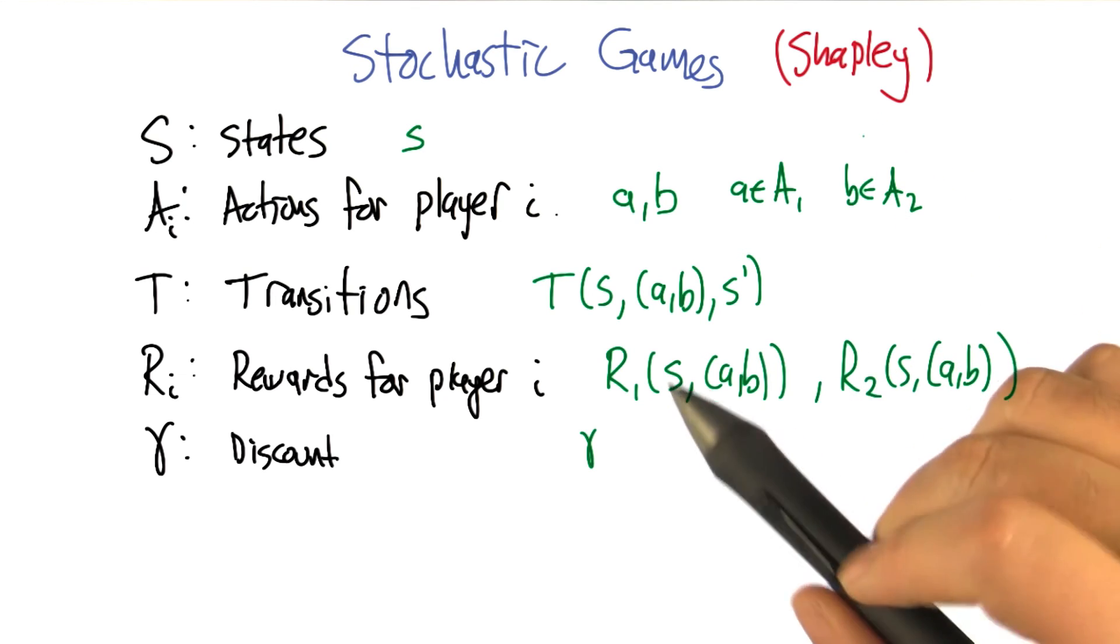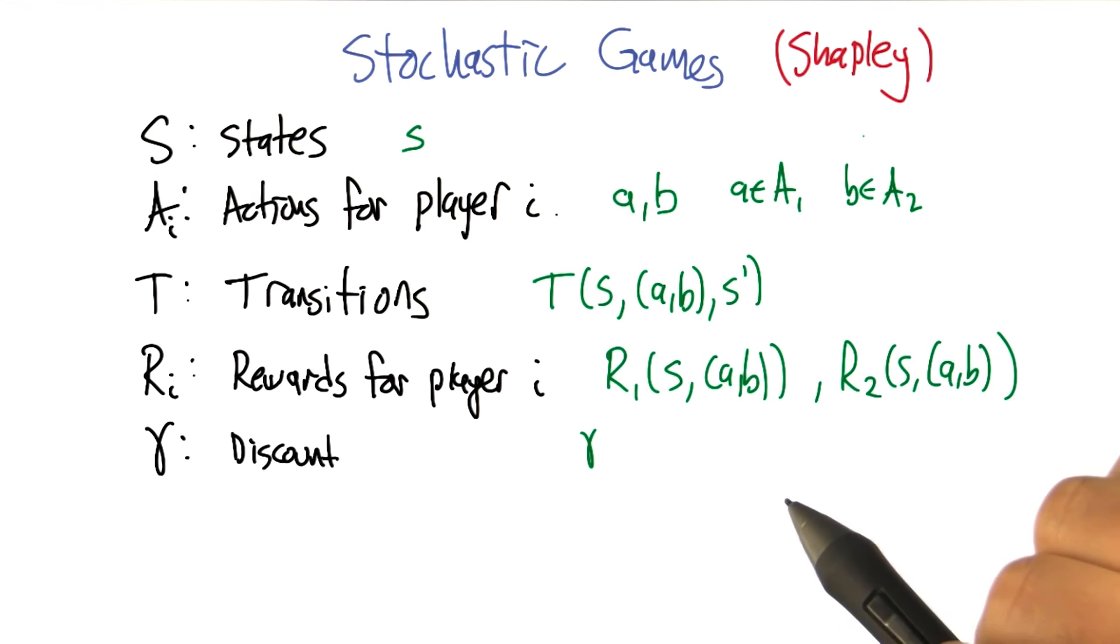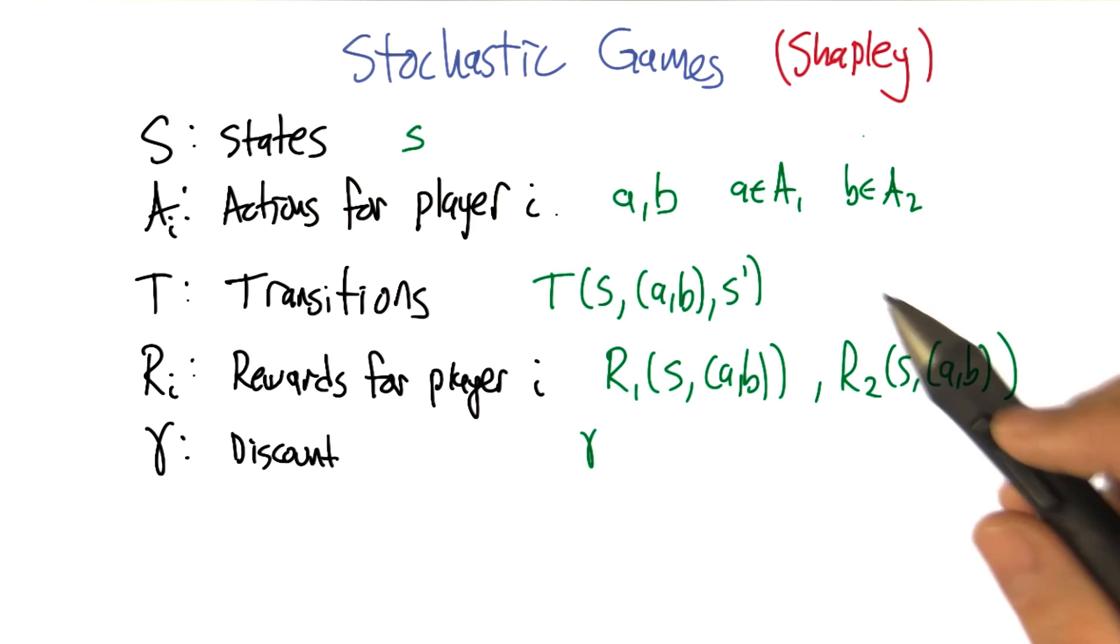And as we're going to see in a moment, this model is actually a generalization of MDPs, but Shapley published it before Bellman published about MDPs. Oh, this is pre-Bellman. So MDPs, to some extent, can be thought of as a narrowing of the definition of a stochastic game.